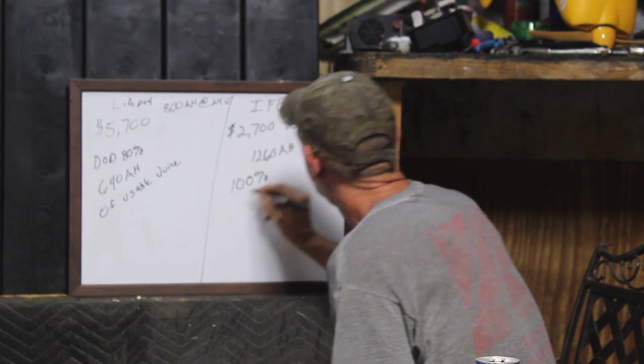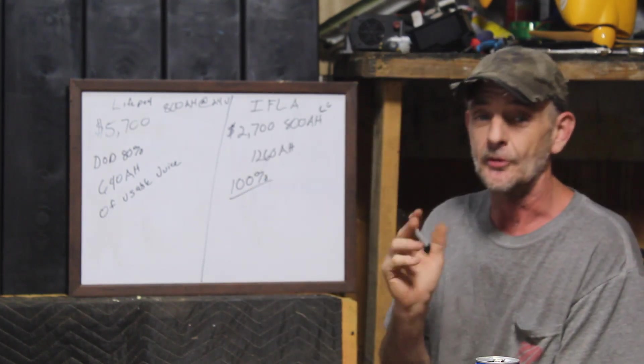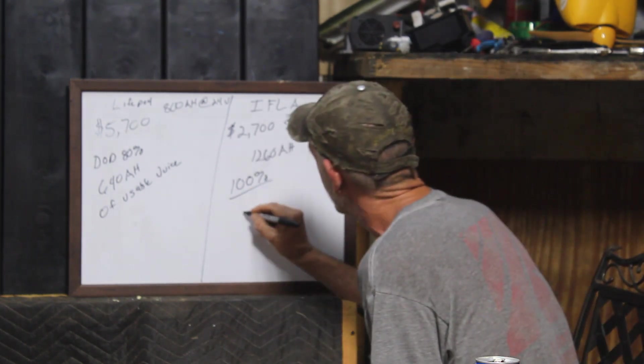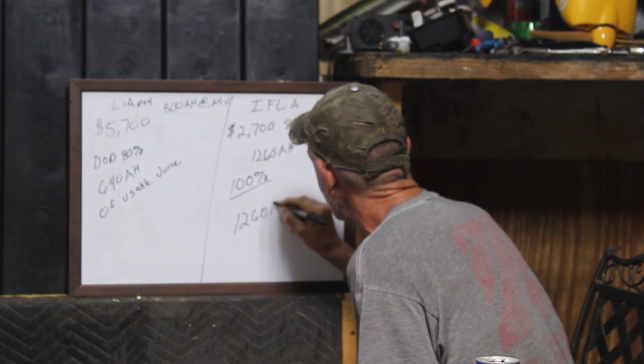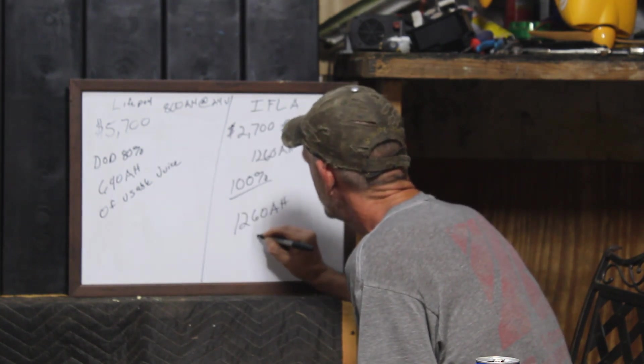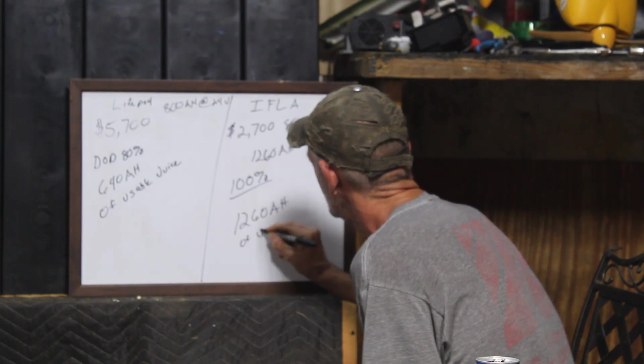So what does that mean? We get 1,260 amp hours of usable juice.